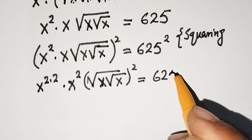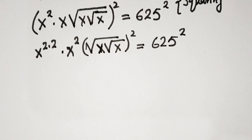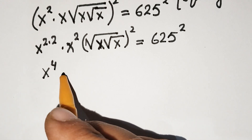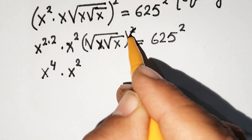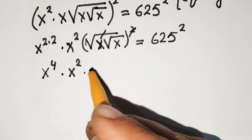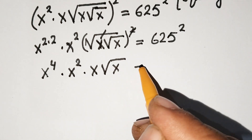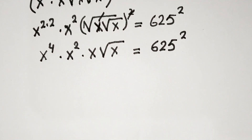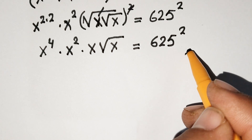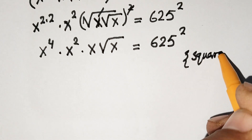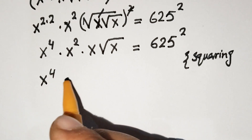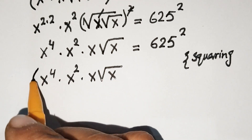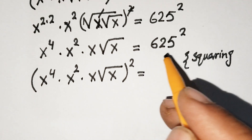Continuing, square root of x times square root of x, squared, equals 625 squared, then whole squared. We now have x to the power 4 times x squared times x times square root of x, all squared, which is equal to 625 squared, and then whole squared.